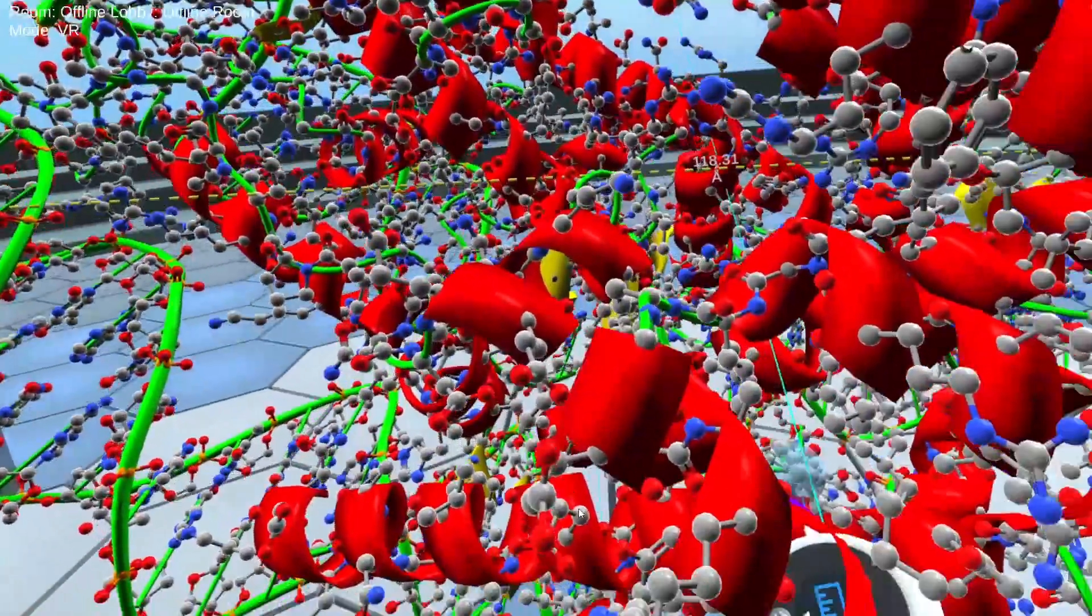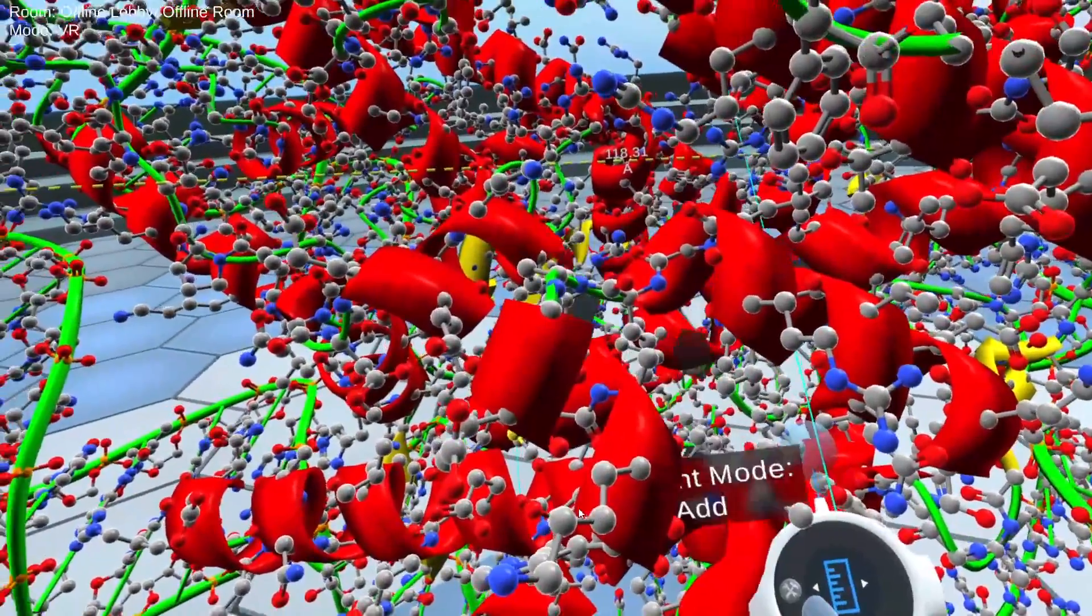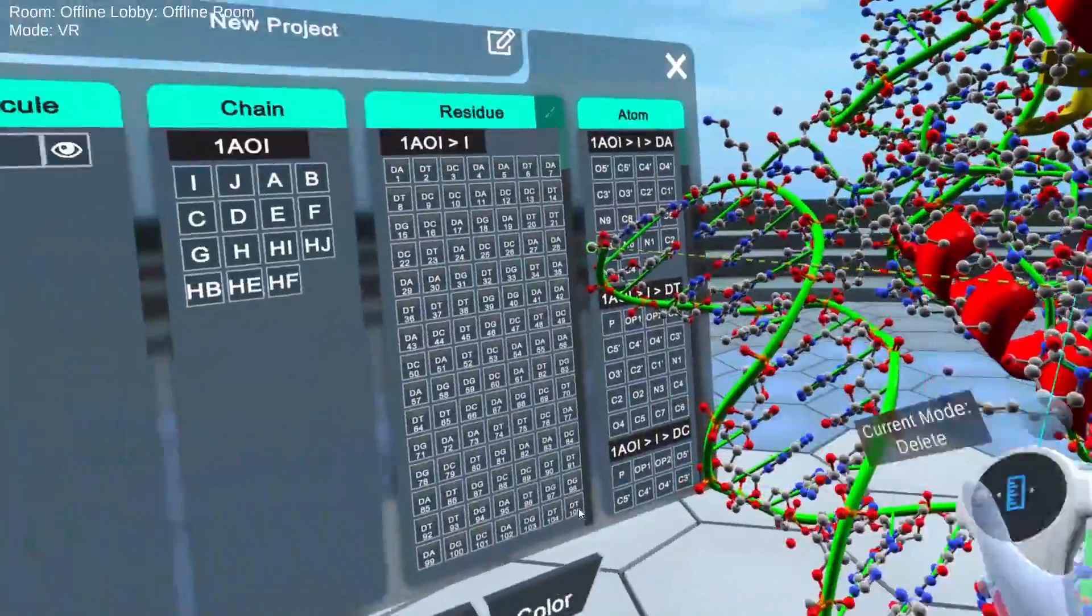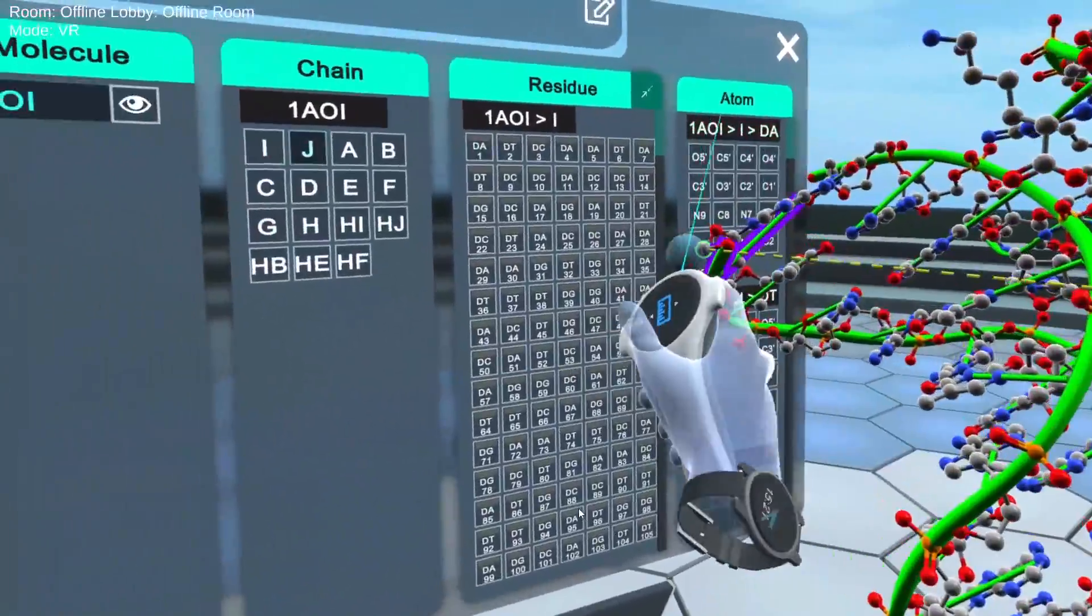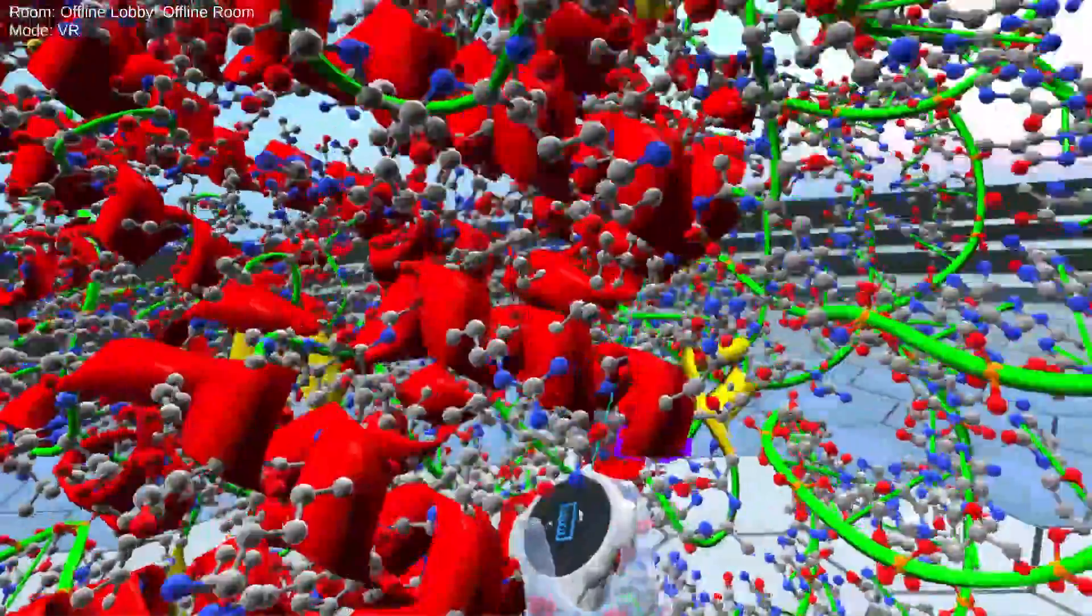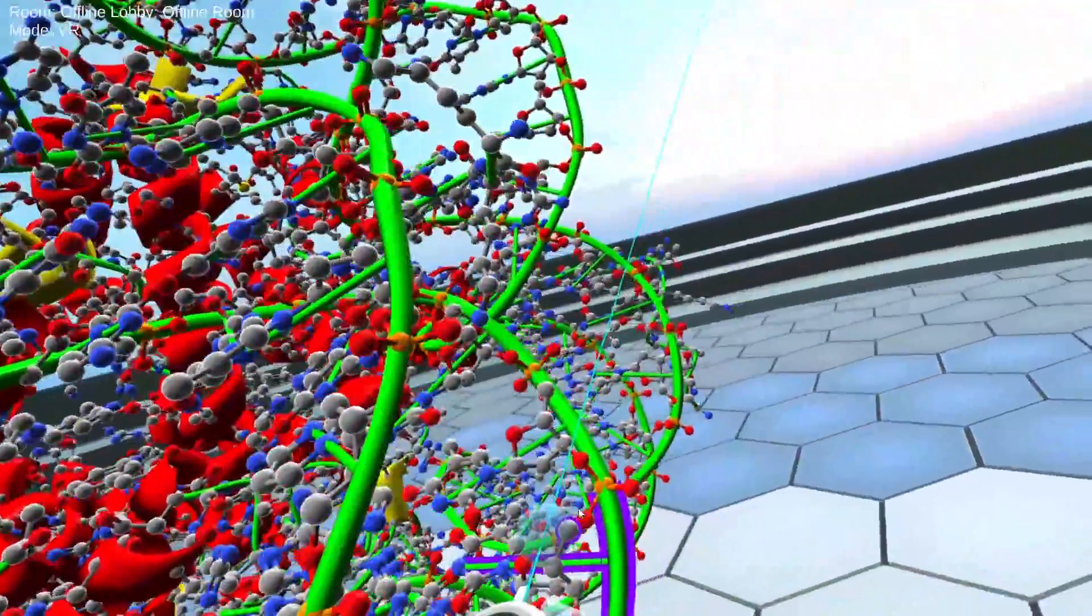So it looks huge, but of course, compared to macroscopic objects, it's still completely invisible. So let's get rid of that. And so that gives you an idea of the scope of the nucleosome.